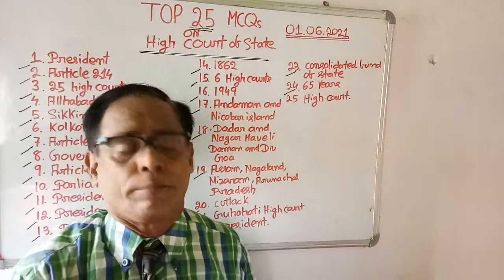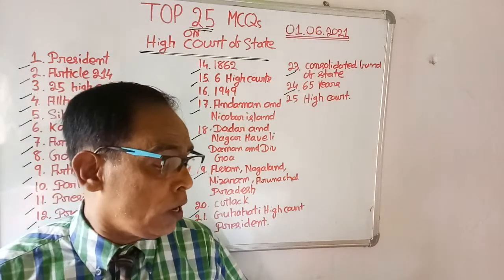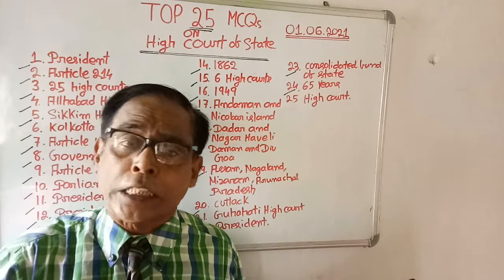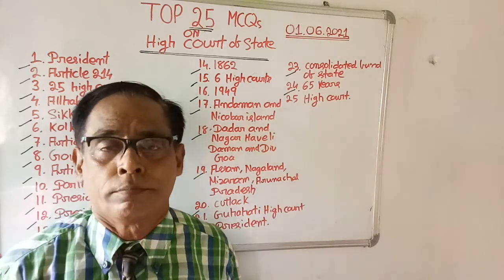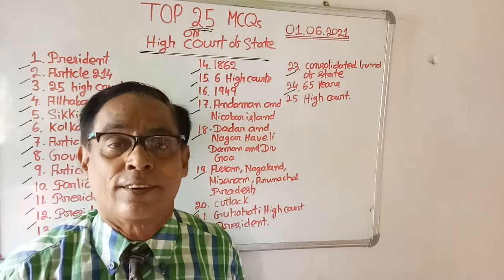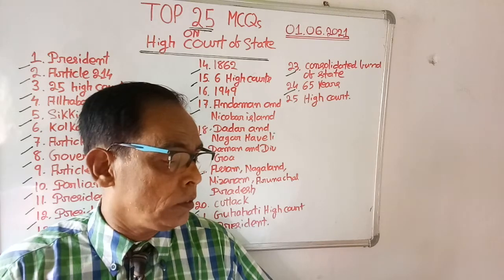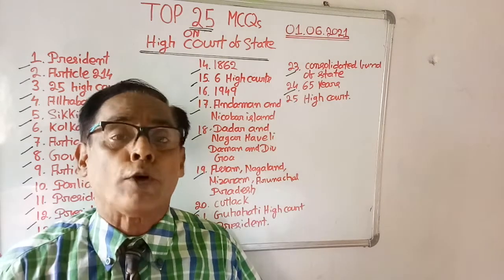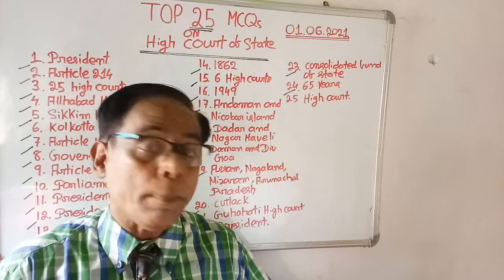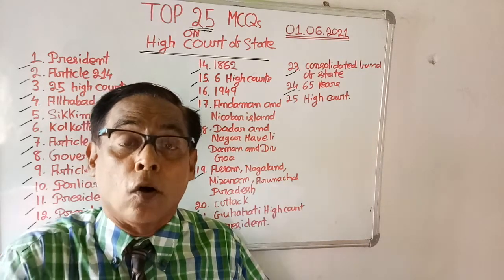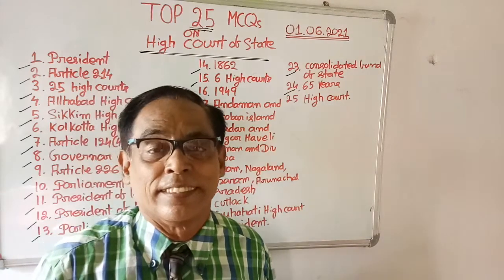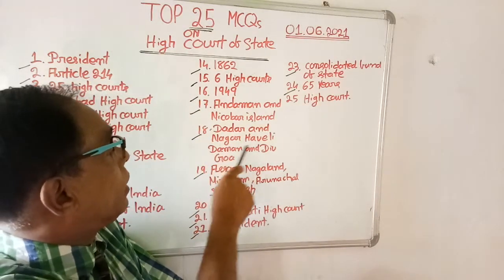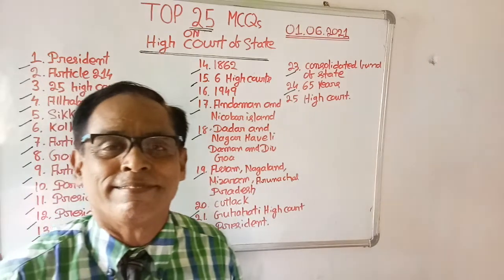Question number eighteen: Bombay High Court has jurisdiction over Maharashtra and which other areas? Options are: (1) Dadar and Nagar Haveli, (2) Daman and Diu, (3) Goa. The right answer is all of these areas — Bombay High Court has jurisdiction over Maharashtra, Dadar and Nagar Haveli, Daman and Diu, and Goa.